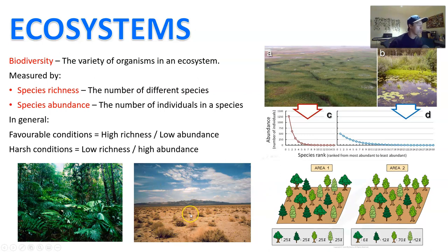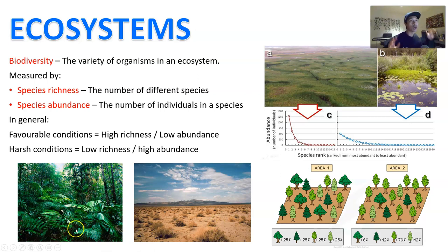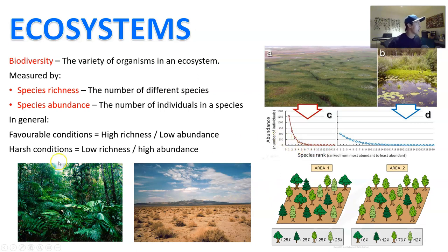In a desert like spinifex, you might only find one or two species of plants, but there are a lot of them everywhere. Whereas a rainforest will have high species richness — lots of different types of plants — but maybe low relative abundance of each one. In general, favorable environmental conditions produce high richness but low abundance because many species are competing. In harsh conditions, you find low richness but high abundance because fewer species have figured out how to survive really well there.